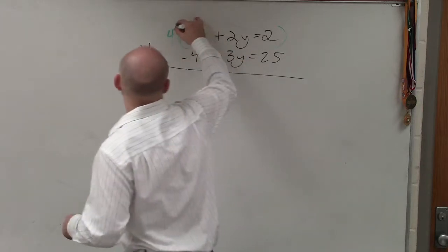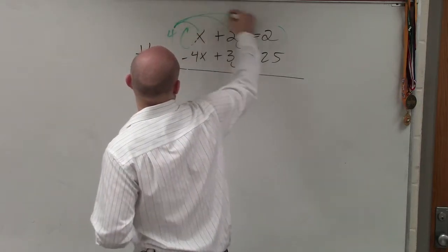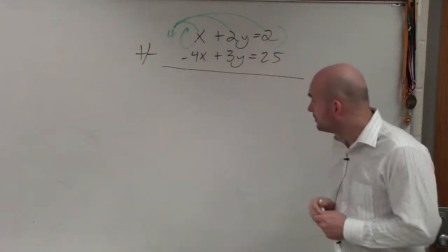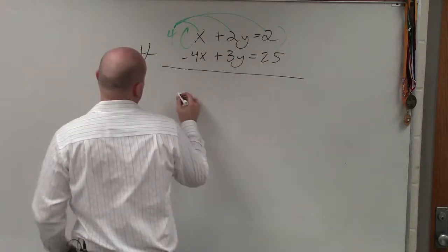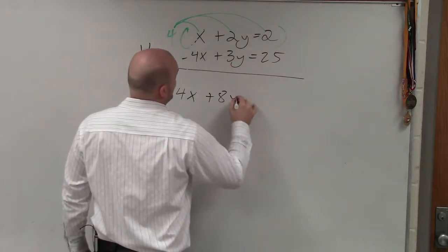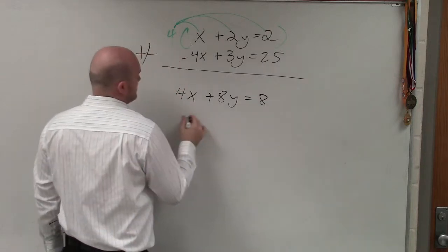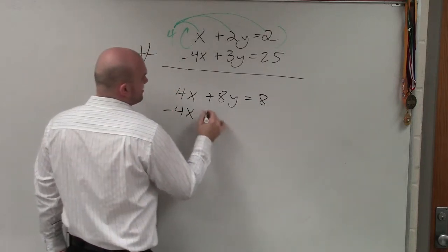So now, I take my equation and I multiply everything by 4. And when doing that, I get 4x plus 8y equals 8. And then, my bottom equation remains the same.